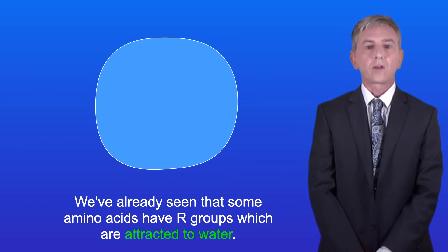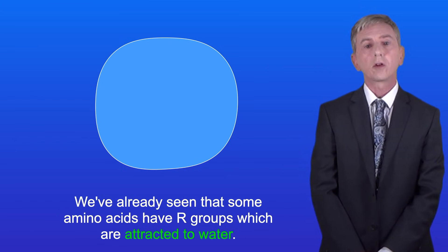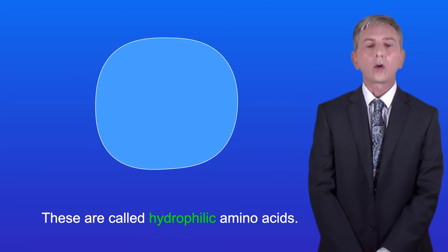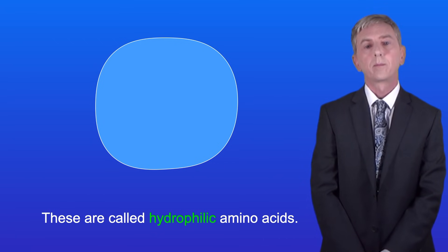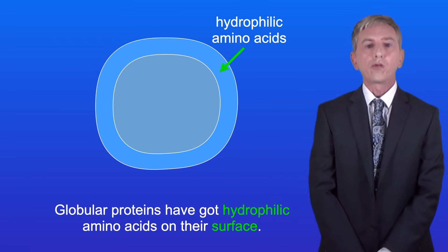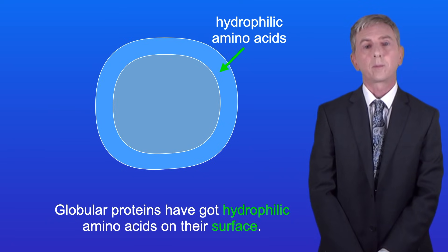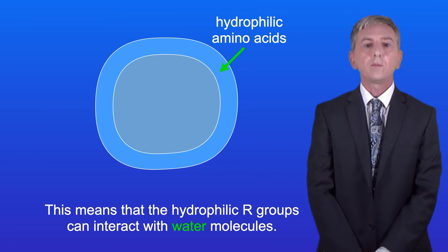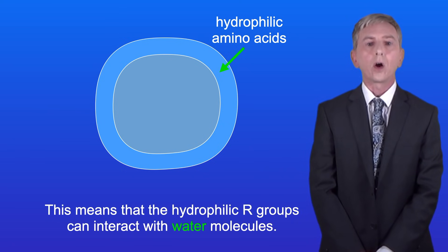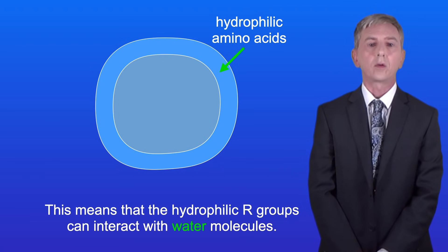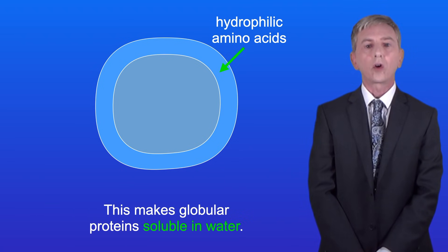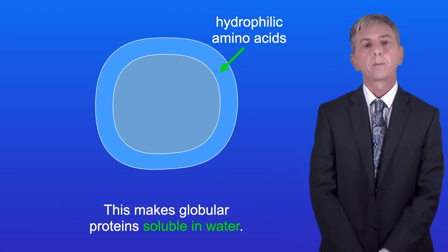We've already seen that some amino acids have R groups which are attracted to water — these are called hydrophilic amino acids. Globular proteins have hydrophilic amino acids on their surface. This means that the hydrophilic R groups can interact with water molecules, and this makes globular proteins soluble in water.